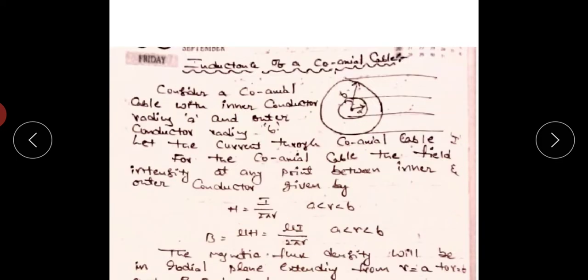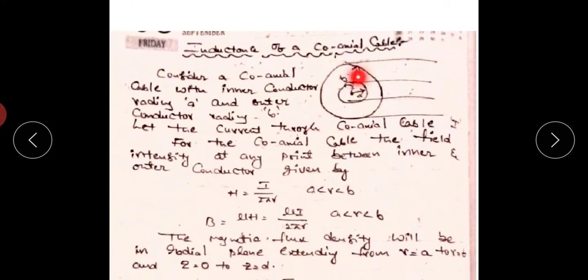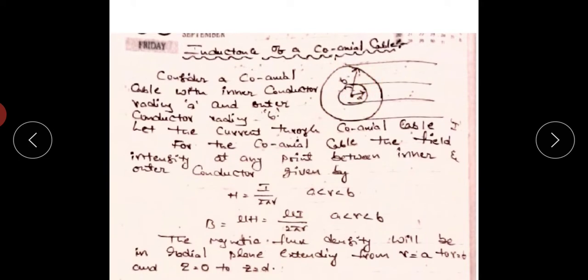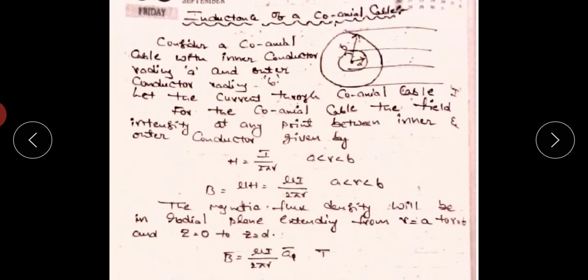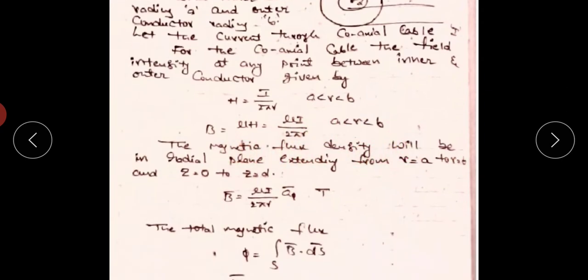Next derivation: the inductance of a coaxial cable. Consider a coaxial cable with inner conductor radius a meters and outer conductor radius b meters. The current in the coaxial cable is I amperes. Between the inner and outer conductors, the magnetic field intensity is H = I / 2πR and the magnetic flux density B = μI / 2πR.